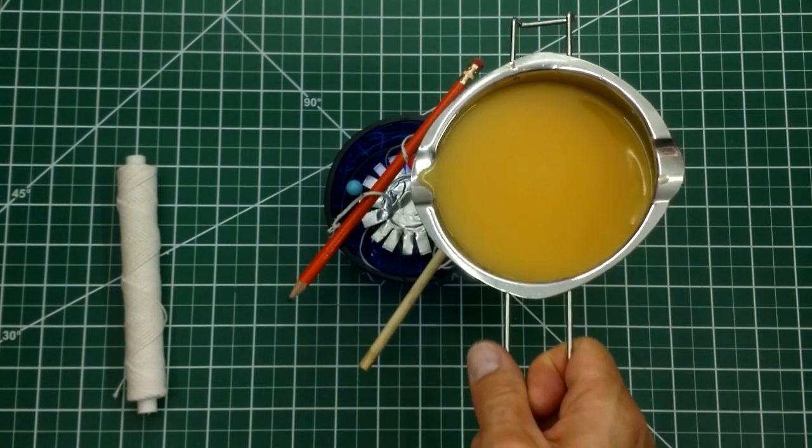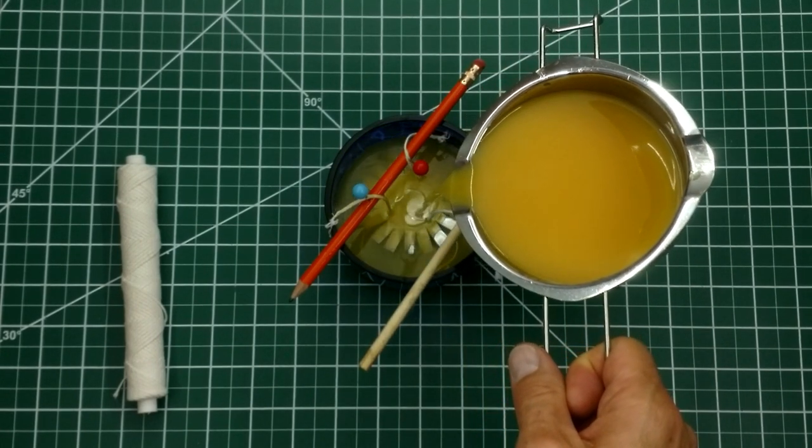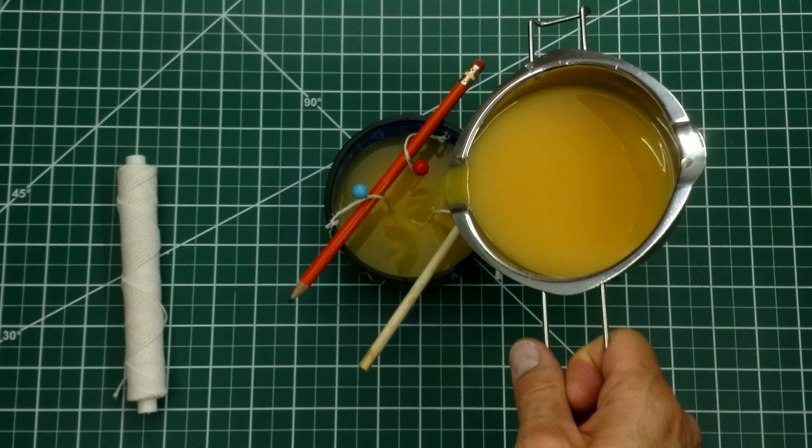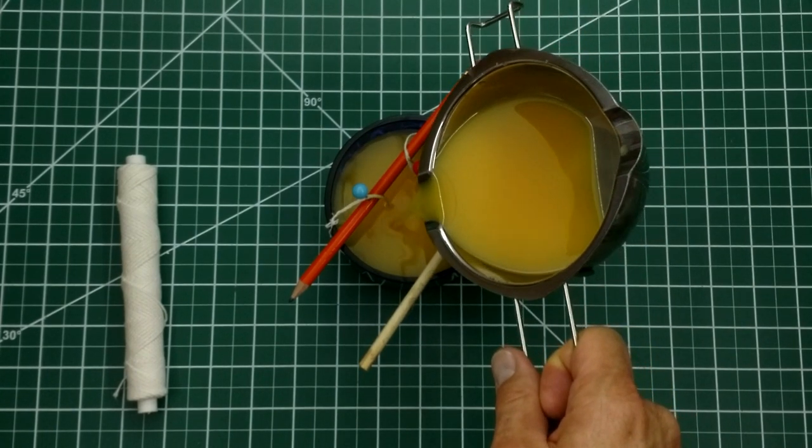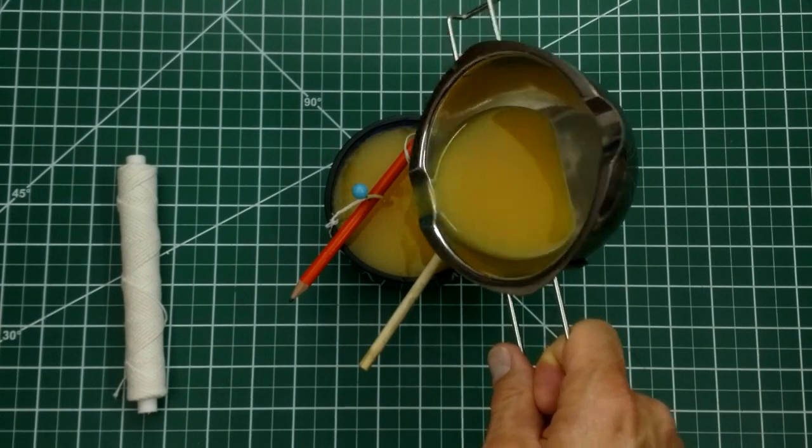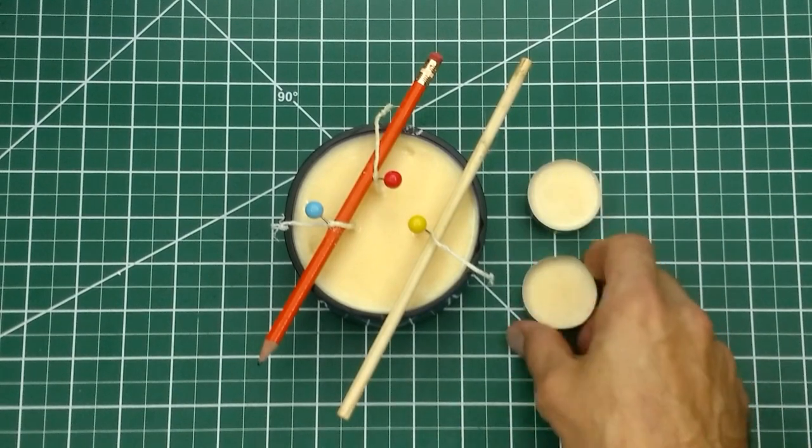Once the wax is melted, I pour it in, making sure to pour some directly onto the wicks. I melted more wax than what I needed, so I just poured the rest into empty tea light candle pans. I could add a wick to those, or just save them for later.